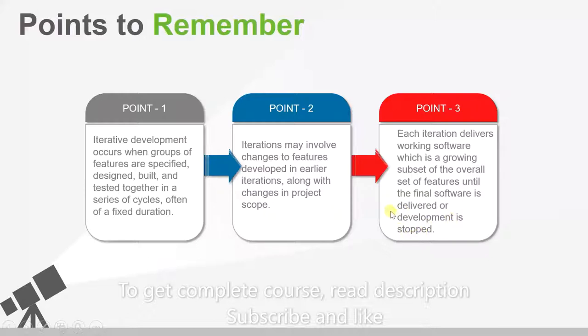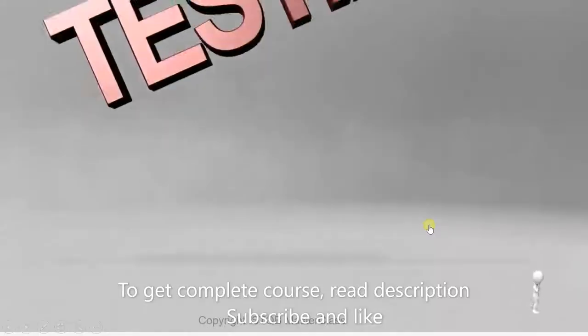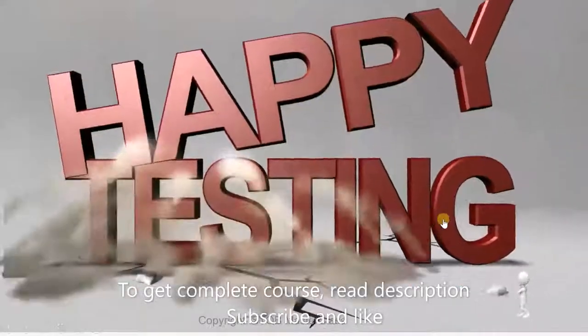So what they're saying is when we had 15 total requirements, the five requirements we developed in phase one were the subset of the overall set of features. This process only ends when we deliver all 15 requirements in working stage. That's all we need to discuss on this topic. Until the next video, happy testing.